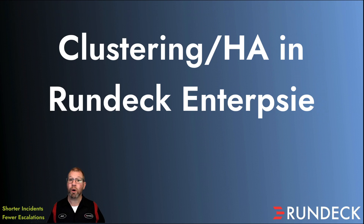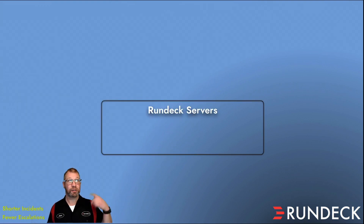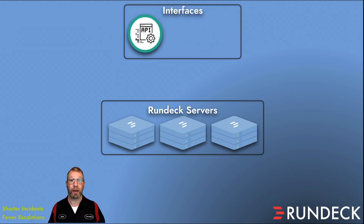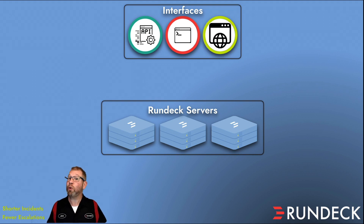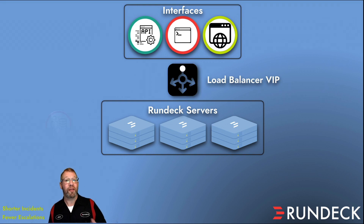Let's take a review of what the Rundeck architecture looks like. We'll have some Rundeck servers — I'm going to put three in my cluster — and out in front of them are the three common ways you can access Rundeck: the CLI, the API, and the web interface. All three methods are equally powerful and equally secure. The Rundeck servers sit behind a load balancer so you can use the clustering configuration that's built into Rundeck.